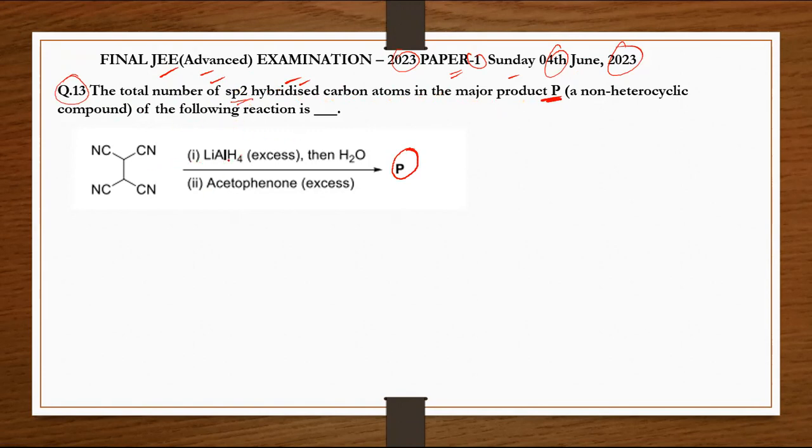In the main compound N, C triple bond N, the reaction is first that is Li Al H4 (LiAlH4), then H2O.